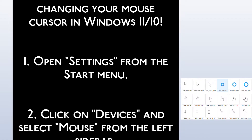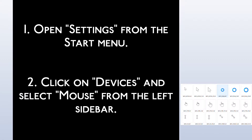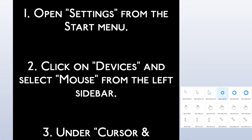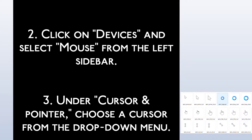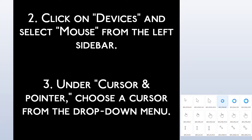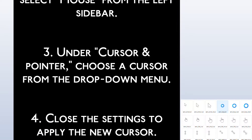Step 2: Click on Devices and select Mouse from the left sidebar. Step 3: Under Cursor and Pointer, choose a cursor from the drop-down menu.